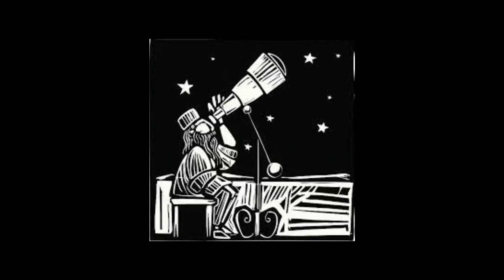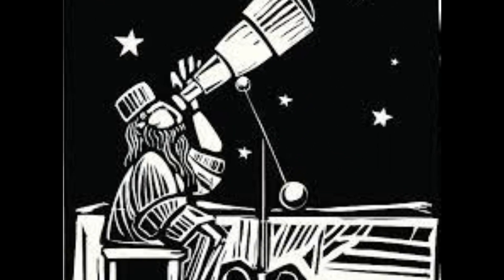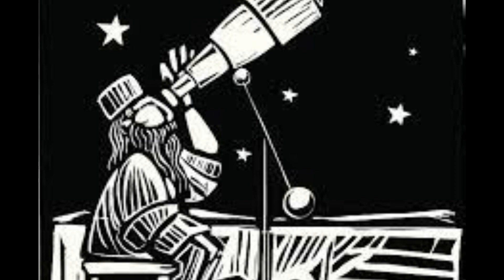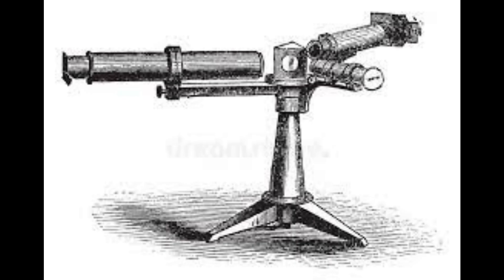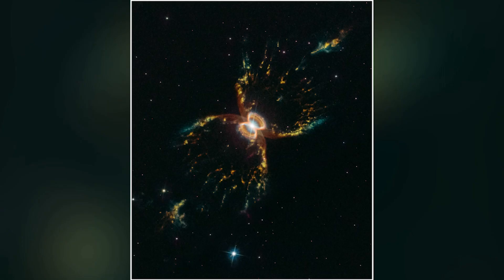In the later half of the 19th century, astronomers began to embrace two new techniques: spectroscopy and photography. Together they helped bring about a revolution in people's understanding of the cosmos.